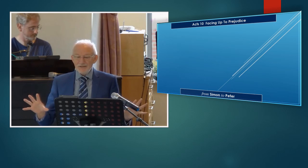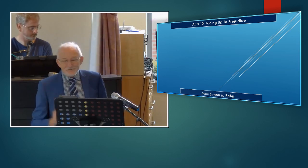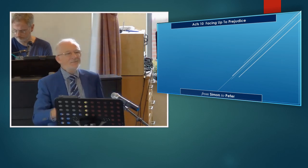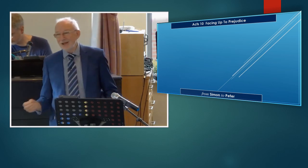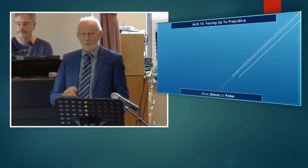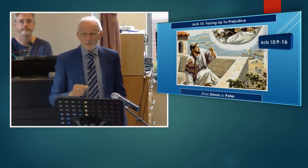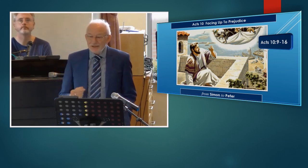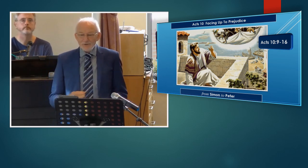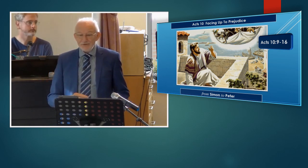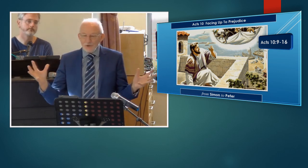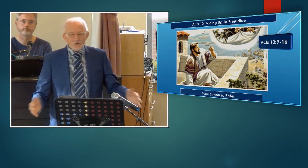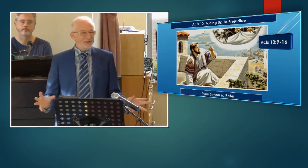And so Peter is shocked when, in a vision, he's told to get up and kill and eat unclean animals. Animals which only Gentiles would eat because Jews, as you know, had and still have, in some cases, strict dietary laws about what they will eat and what they won't eat. This is the story, as Luke, the early church historian, puts it in Acts chapter 10 and verses 9 to 16. We're told that about noon the following day, as they were on their journey and approaching the city, Peter went up on the roof to pray. He became hungry and wanted something to eat. And while the meal was being prepared, he fell into a trance. He saw heaven opened and something like a large sheet being let down to earth by its four corners. It contained all kinds of four-footed animals, as well as reptiles and birds.